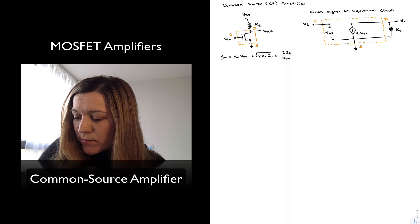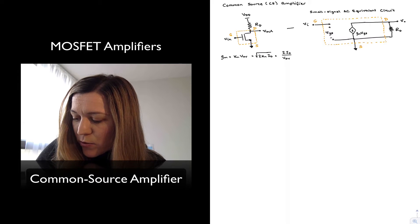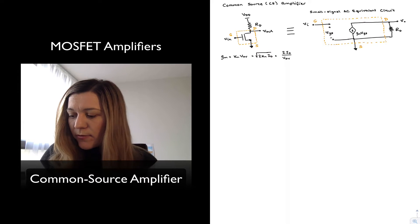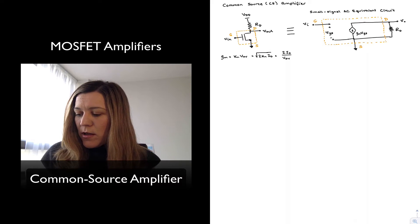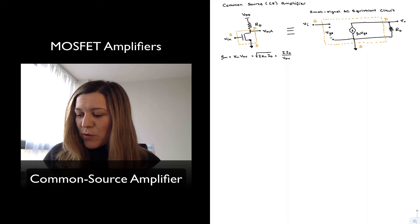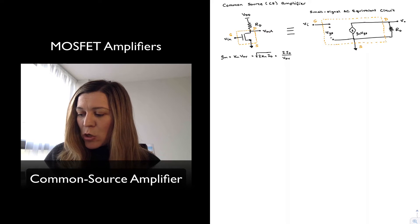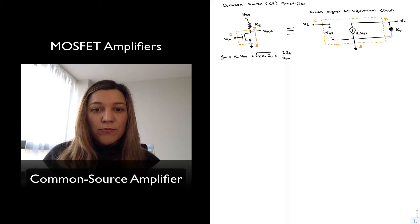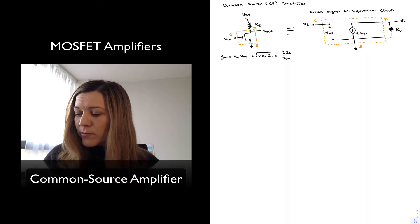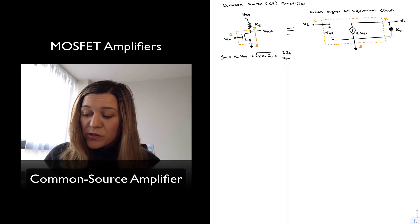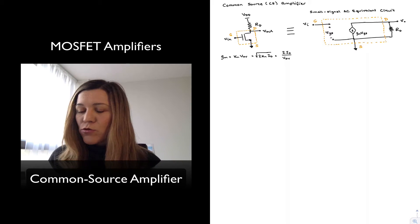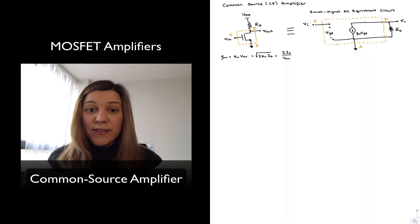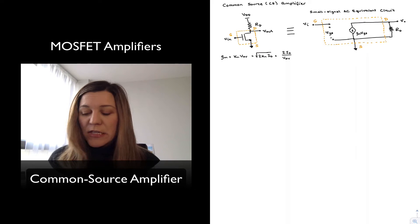And so these two circuits we can say they're equivalent for small AC signals. So I have my input, notice that my transistor is what I have encircled in my orange area there. So basically the model consists of an open circuit from gate to source and there's a current source from drain to source whose value depends on the input signal VGS. It's GM times VGS.